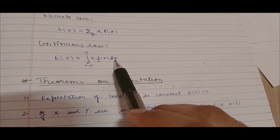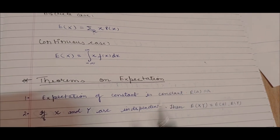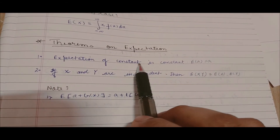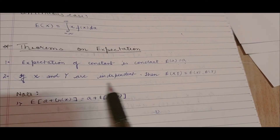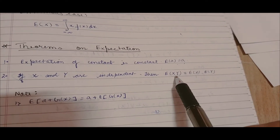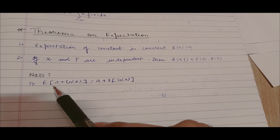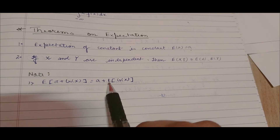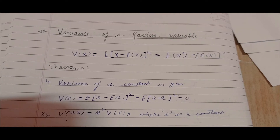We would be solving problems to see this more clearly. Now, theory on expectation: expectation of a constant is that constant, i.e., E(a) = a. If X and Y are independent, then E(XY) = E(X) · E(Y). One note: E(a + g(x)) = a + E(g(x)), where a is a constant.